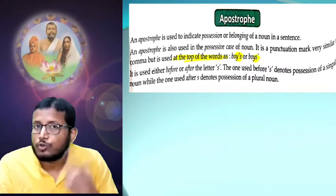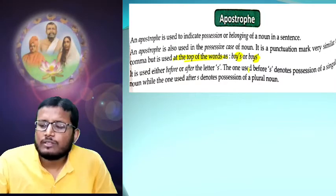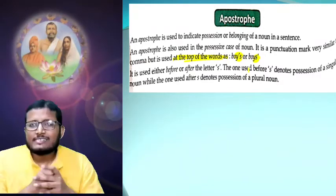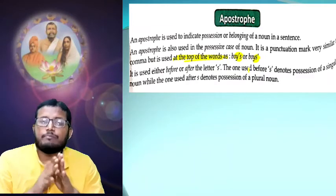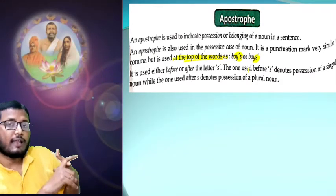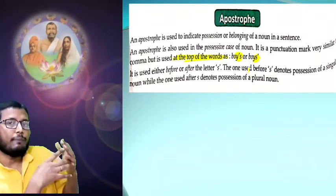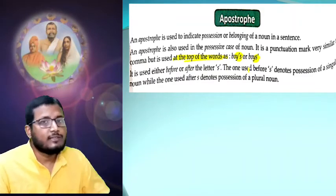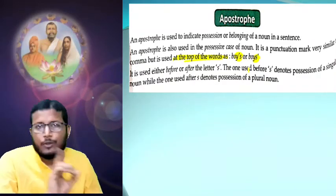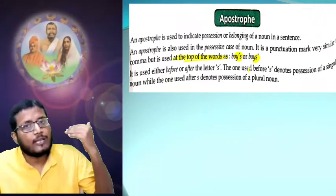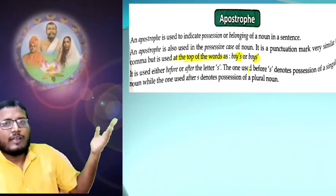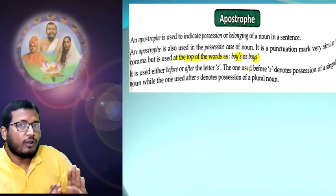Here you can see two words: boy's and boys'. The first is singular and boys is plural. The apostrophe can be applied for both singular and plural. For singular — comma and then S. For plural — only comma, no S after the plural word. You can see in the second example 'boys'' — B-O-Y-S apostrophe — and after that we have not written any S.